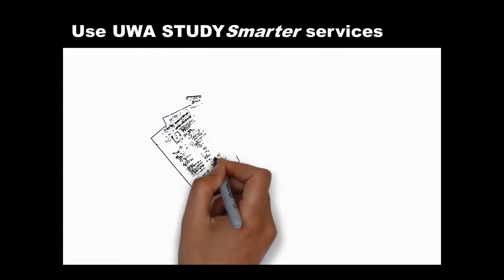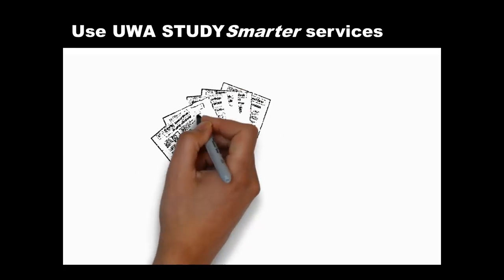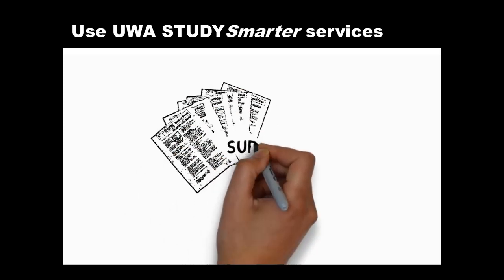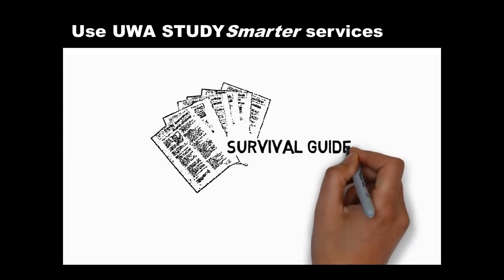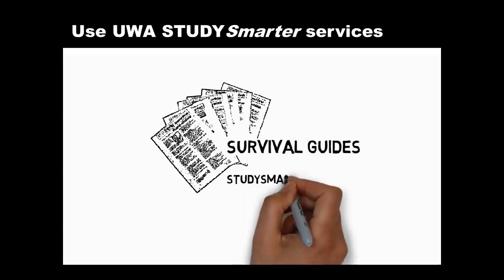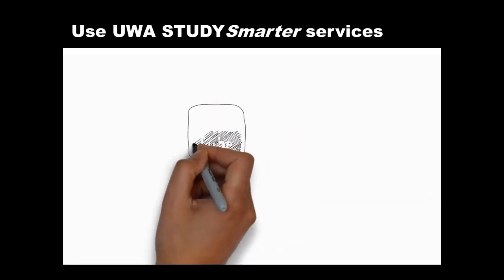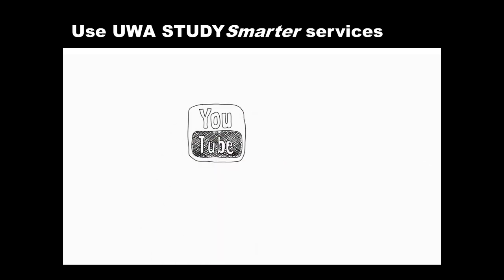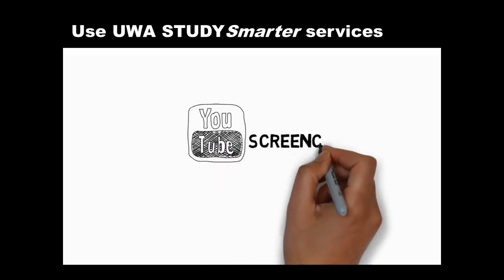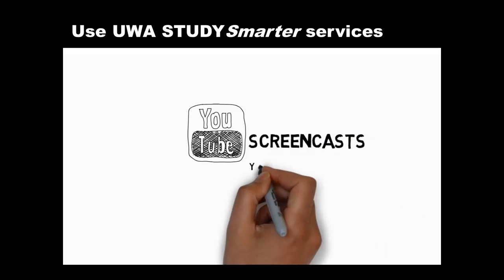So long from me and remember, there's lots of help available from Study Smarter at UWA. For example, you can download survival guides from our website. These are handy one-page advice sheets on topics that can help you with your studies. You can also get other Study Smarter YouTube screencasts to help with your writing. Good luck with your writing and see you soon. Thank you.